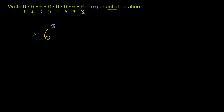I want to make it very clear: this is not equal to 6 times 8. 6 times 8 will only be 48. 6 to the 8th power is a super huge number. 6 times 6 is 36, then you're going to multiply that times 6 — that's 216. And then you keep multiplying it by 6, you get some huge number.